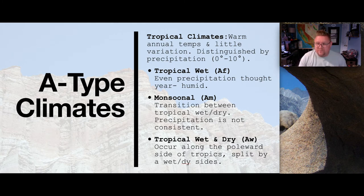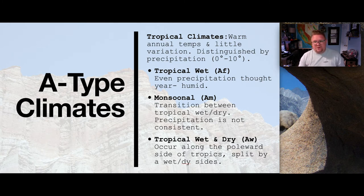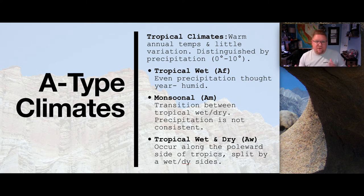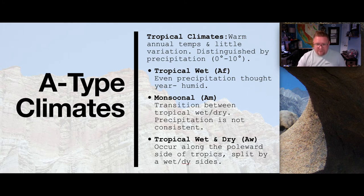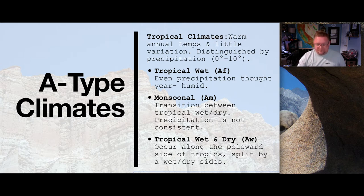When I think of monsoonal areas, India comes to mind — months of extreme precipitation, but also months of extreme dryness. AW is tropical wet and dry, occurring closer towards the poleward sides of the tropics, where it's really split between a very wet and a very dry side. One is completely wet, one is very dry.